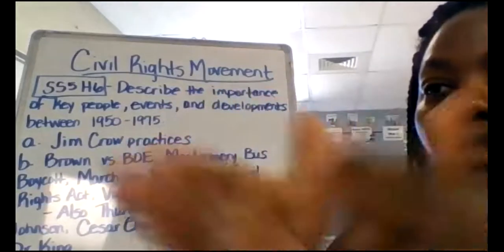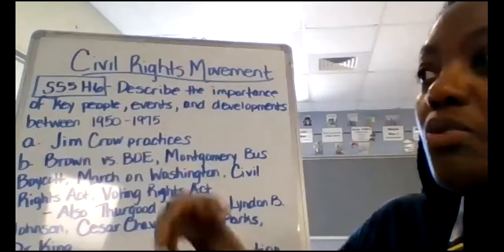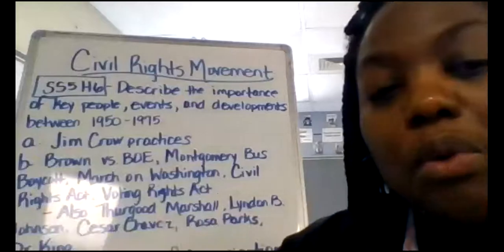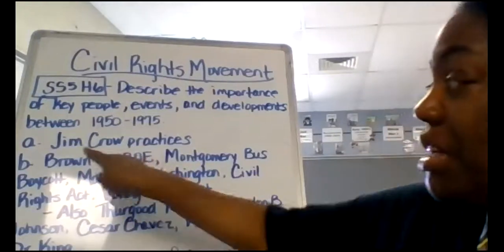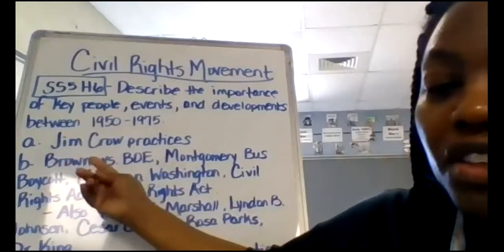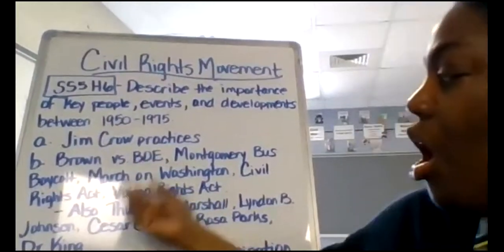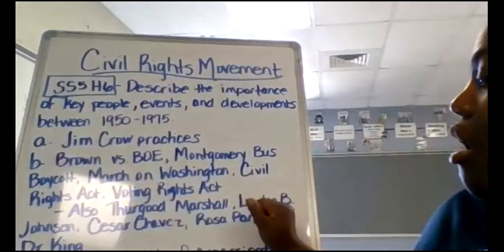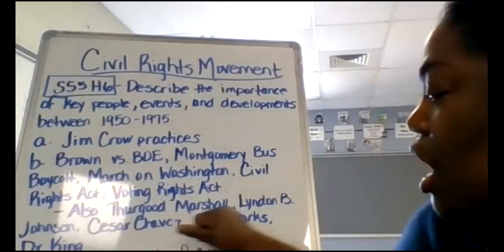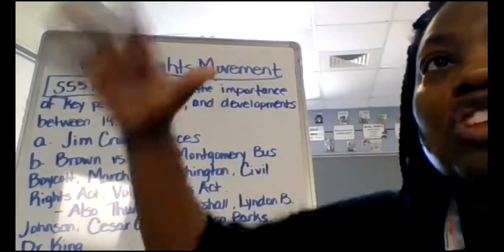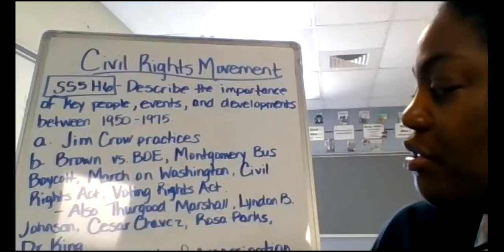The Jim Crow practices — we know that segregation was legal. If an African American was caught drinking out of a white water fountain or going into a white restroom, they were arrested, and it was legal. That's why they arrested Rosa Parks — because she refused to give up her seat on the bus. Then we have Brown v. Board of Education, the Montgomery Bus Boycott, the March on Washington, the Civil Rights Act, and the Voting Rights Act. Key people include Thurgood Marshall, Linda Brown's lawyer; Lyndon B. Johnson, who became president after JFK; Cesar Chavez, a civil rights activist who helped migrant workers; Rosa Parks, who sparked the Montgomery Bus Boycott; and Dr. King, who was the nonviolent leader and spokesperson during this time for the civil rights movement.